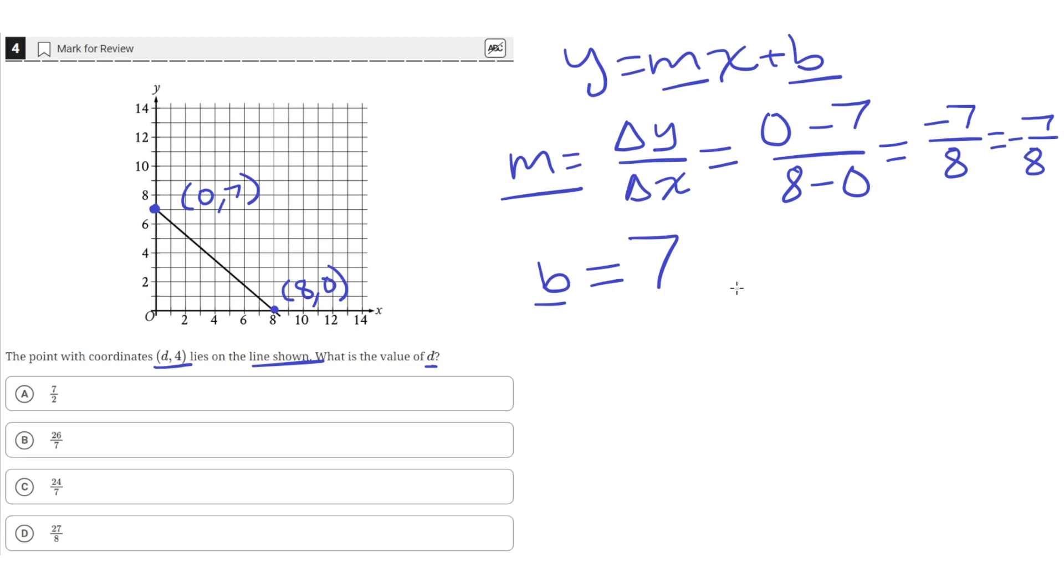So now we can write our equation in y equals mx plus b format. So y equals mx, so our m is negative 7 eighths times x plus 7, the y-intercept. So now we have the equation of this line.